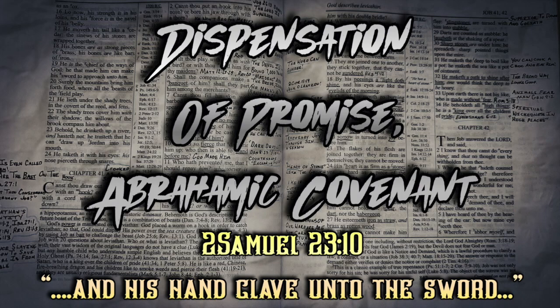Now here are the failures in this dispensation — there are a lot of them, just as in every dispensation. Abraham was supposed to get away from his kindred — that was the first failure. When he went to the land God wanted him to go to, he takes Lot his nephew with him. Lot ends up having two sons that would become the Ammonites and Moabites — two more thorns in the flesh to Israel.